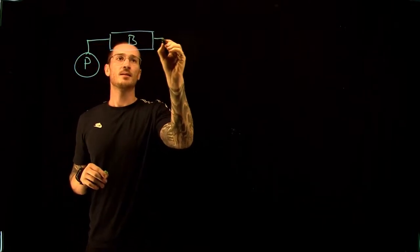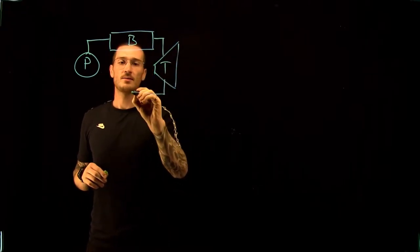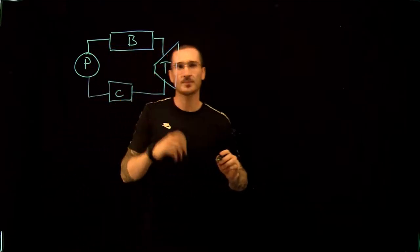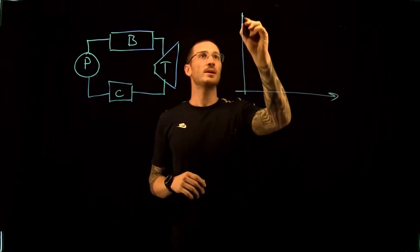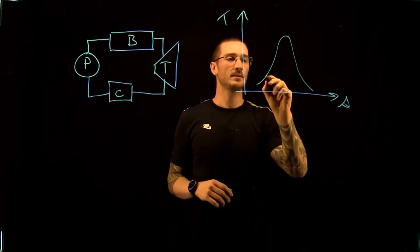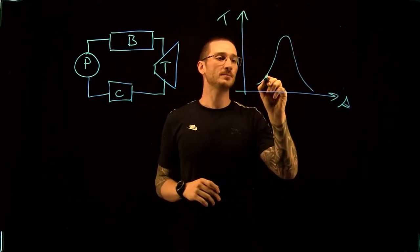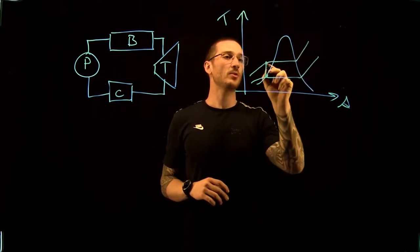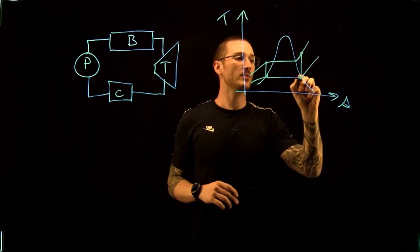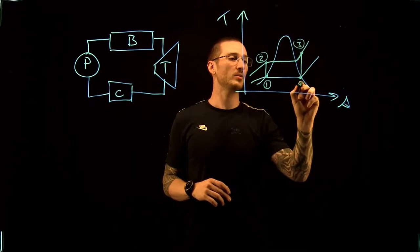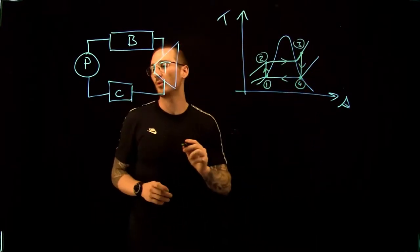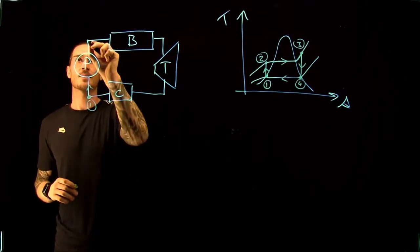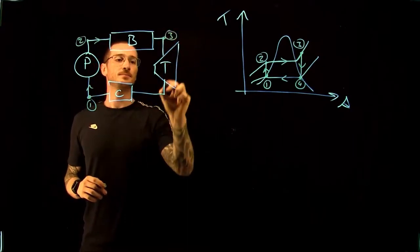First, we're going to draw our simple Rankine cycle. We have a pump that goes into a boiler, then through a turbine, finally through the condenser, and back to the pump. If we draw this on the TS diagram, we go from saturated liquid water at a certain low pressure, up to a high pressure right before the boiler, through the boiler to a high temperature, and back down through the turbine. We call these points 1, 2, 3, and 4, and we can draw them on our cycle as well.